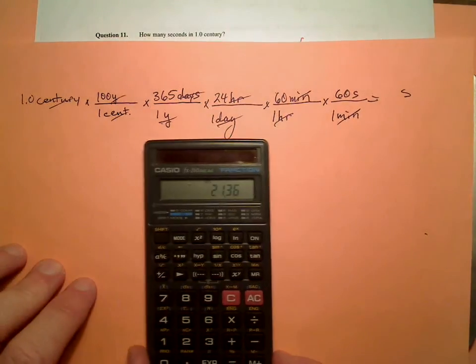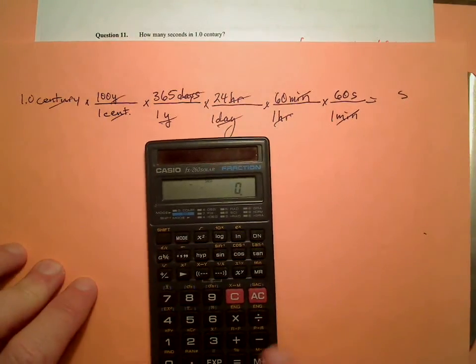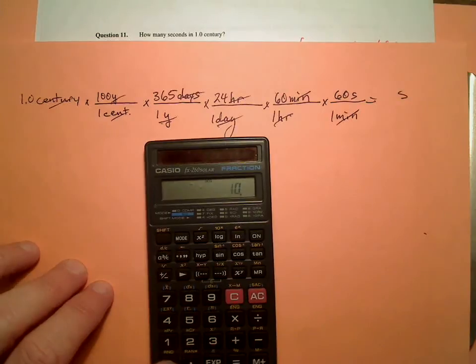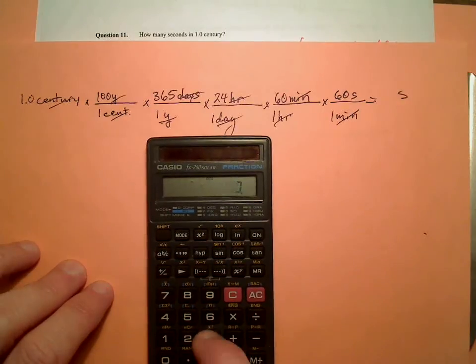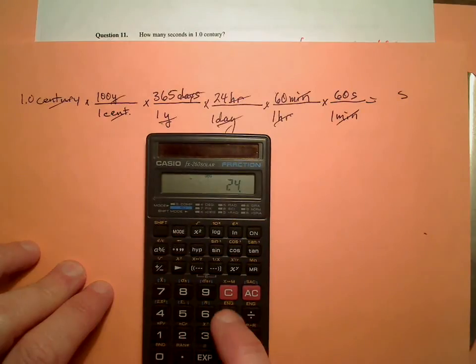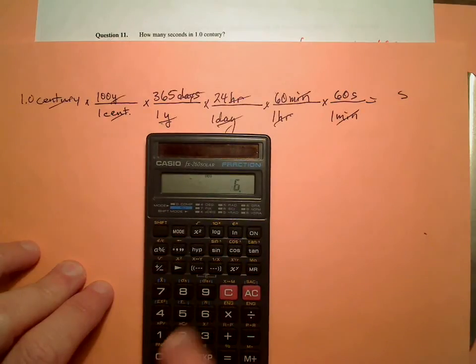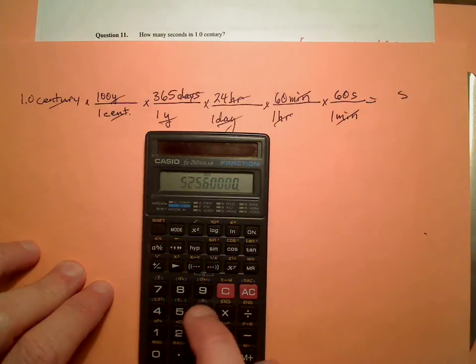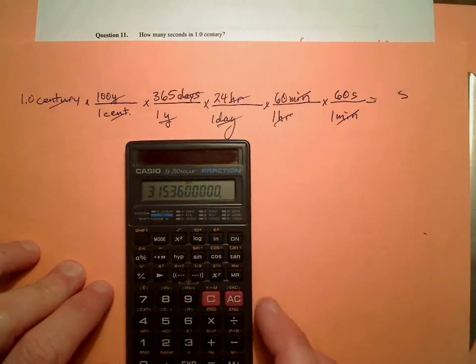Don't have to worry about the denominator. So we have 1.0 times 100 times 365 times 24 times 60 times 60 equals.